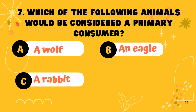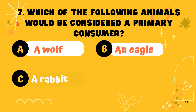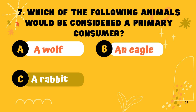Question 7. Which of the following animals would be considered a primary consumer? Option C: A rabbit.